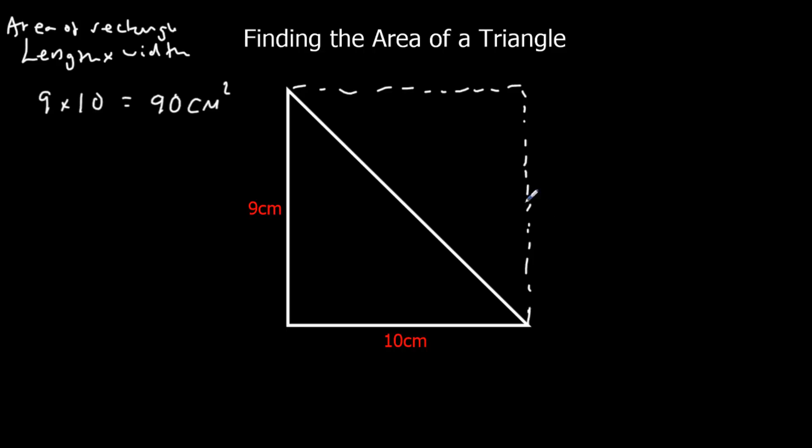But I don't want the whole shape, and it's cut exactly down the middle. So I only want half of this shape. So what I'm going to do is I'm going to half the 90, and that's going to give me my answer for the area of the triangle, which is half times the area of the rectangle. Half times 90, which would be 45 cm squared.